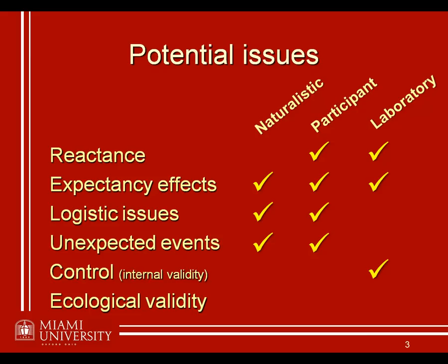Laboratory settings also provide enhanced control, which means it's a lot easier to attribute the behaviors you're witnessing specifically to whatever manipulation you're doing or whatever characteristics of the situation you're creating. Because you have much tighter control over factors like weather, lighting, and temperature, it's a lot easier to say that the behaviors you're witnessing — your dependent variables — are caused by the independent variables of interest. This leads to what we'll refer to when we talk about experiments as internal validity: the tight link between the IVs and DVs in your study.